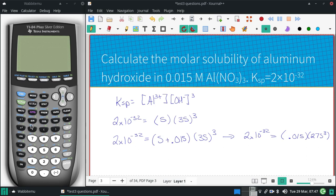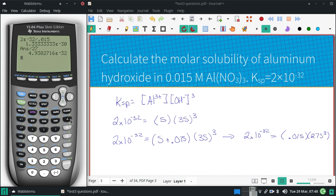And see what I get on my calculator. So I have 2 times 10 to the negative 32nd. Divide it by, I'll do them separately, 0.015. And then divide it by the 27. And now I need the cube root of that. And I get a very small S of 3.7 times 10 to the negative 11th.